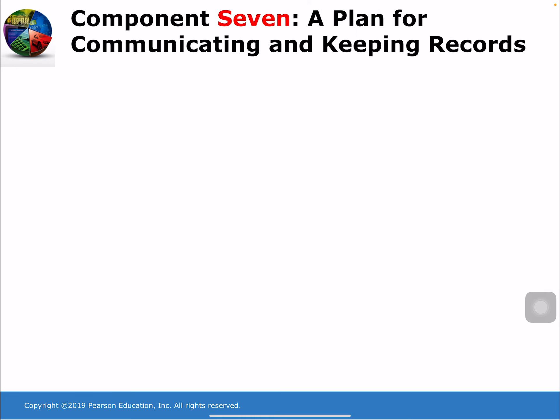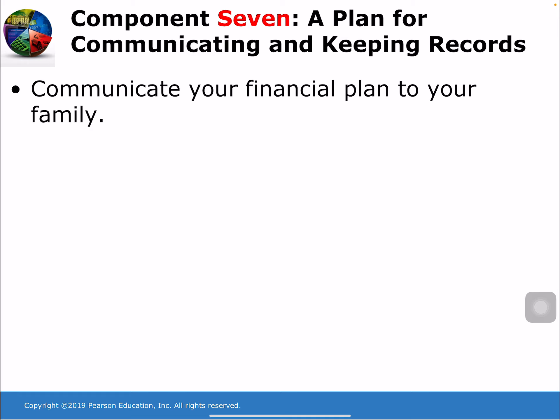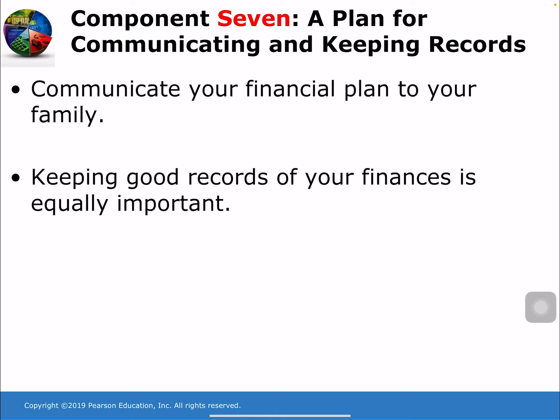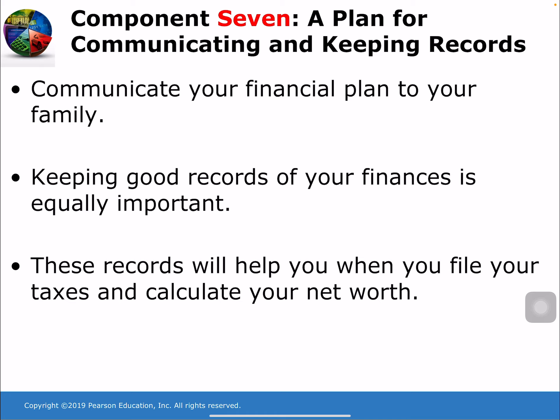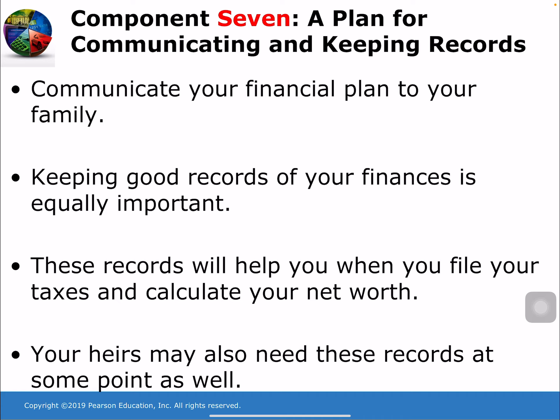Component 7, the last component, is a plan for communicating and keeping your records. Communicating your financial plan to your family is very important, especially your spouse. If you are planning to do something with your money, it should be communicated clearly to reduce arguments about your financial condition. Keeping good records of your finances is equally important — these records will help when you file your taxes and calculate your net worth, and your heirs may also need them.